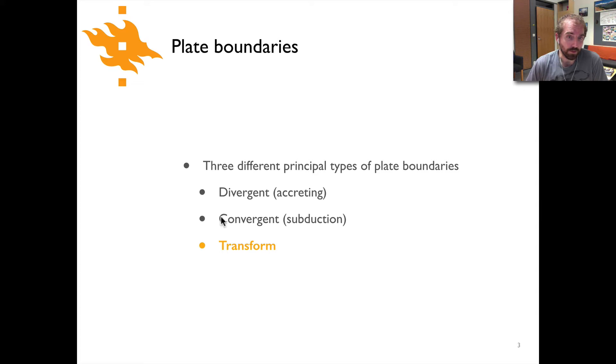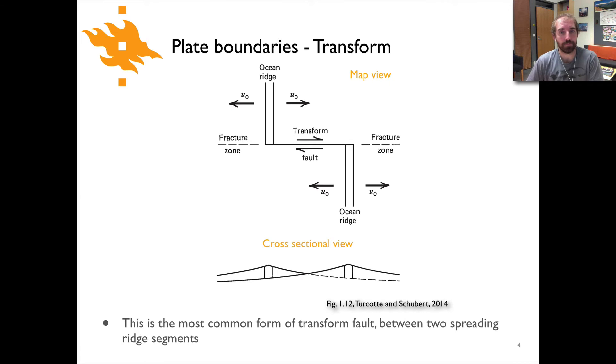As we've seen, we have the three different types of boundaries. Here we're going to talk about transforms. What we're looking at now is an example of a transform boundary in the top panel in map view and in the lower panel in a cross-sectional view. The transform boundary is here offsetting two segments of an oceanic ridge that are shown at the top and bottom.